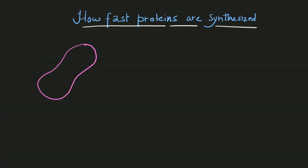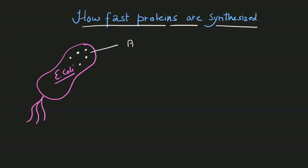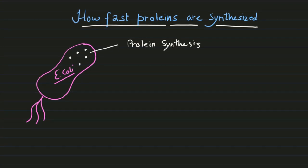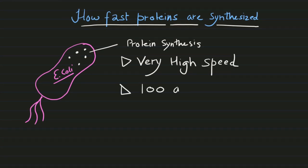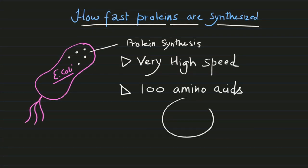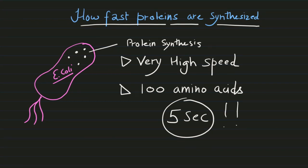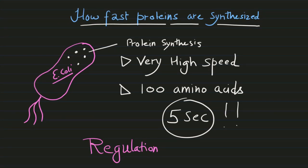Inside an E. coli cell, protein molecules are synthesized constantly and at a very high speed. These molecules synthesize a 100 amino acid long polypeptide in just 5 seconds. Therefore, the regulation of protein synthesis is very important.